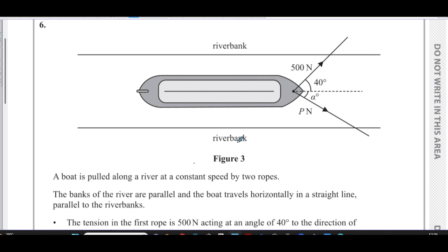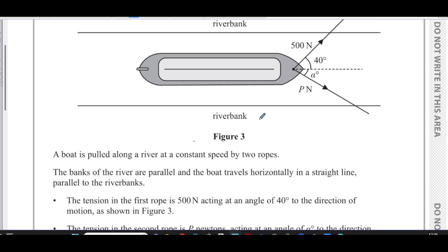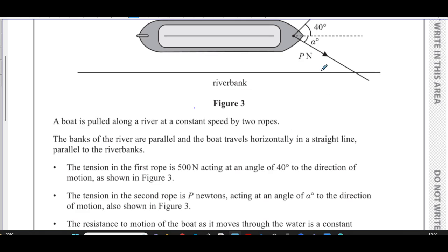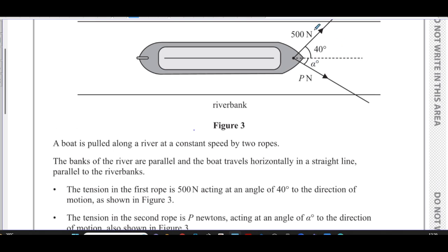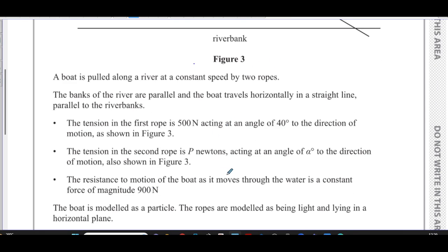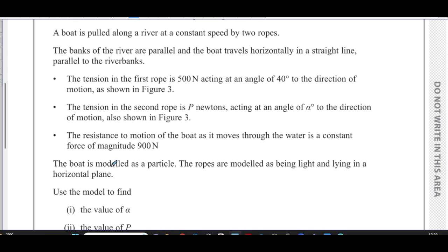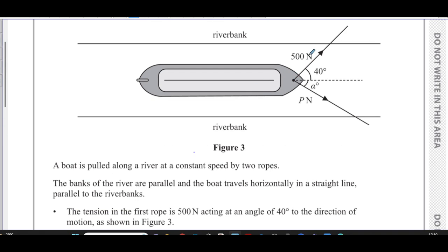The tension in the first rope is 500 newtons acting at an angle of 40 degrees to the direction of motion, as shown in figure three. The tension in the second rope is P newtons acting at an angle of alpha degrees to the direction of motion, also shown in figure three — one rope acting to the left, the other to the right. The resistance to motion of the boat through the water is a constant force of 900 newtons acting opposite to the direction of motion. The boat is modelled as a particle, and the ropes are light and lie in a horizontal plane.